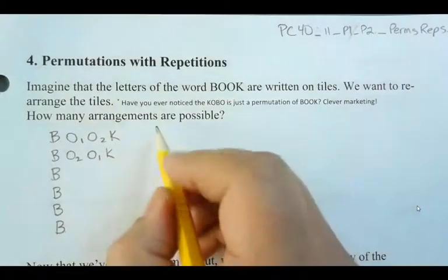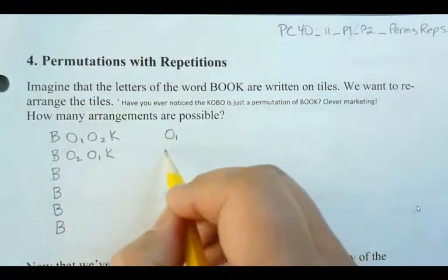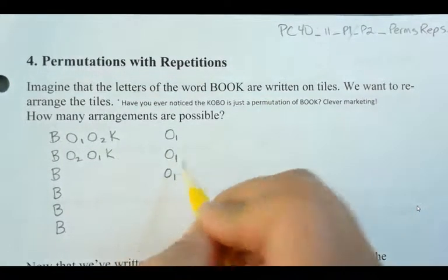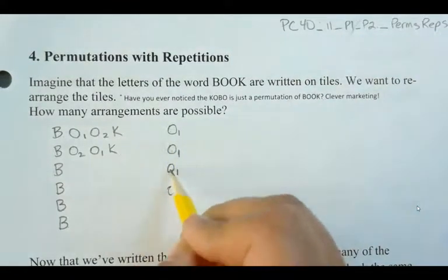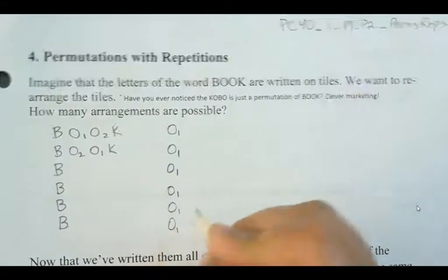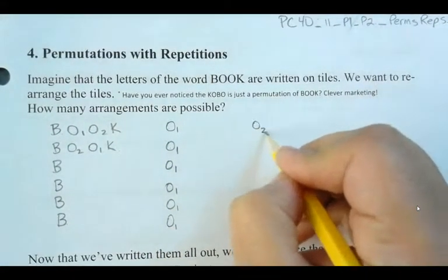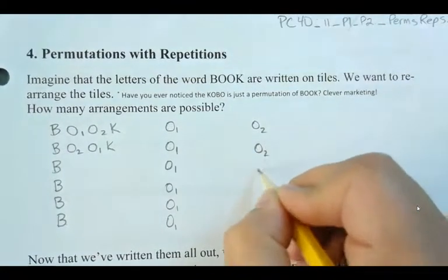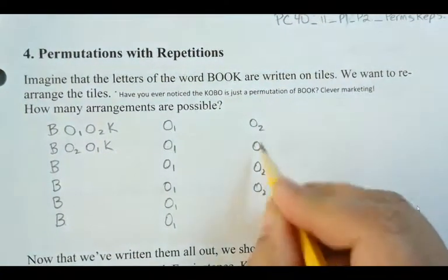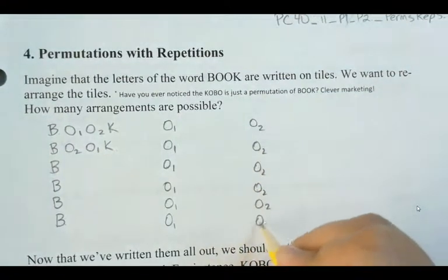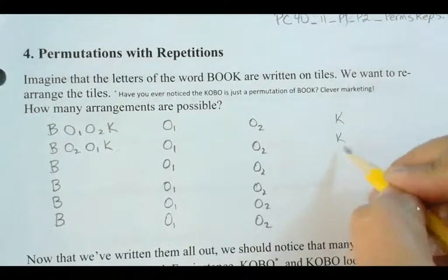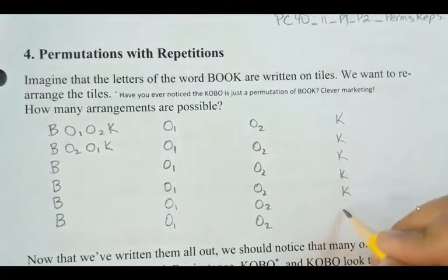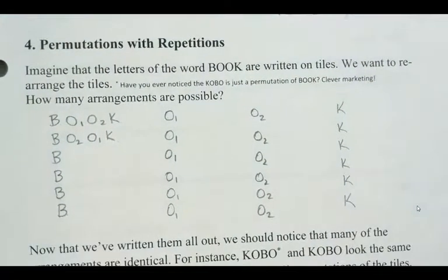Over here I can start with O1, and I'm going to have six different ways to do that. Then I can start with O2 — again six arrangements. And then my last set will start with K — another six. I'm going to hit pause, write down all the different combinations, and then we'll continue.